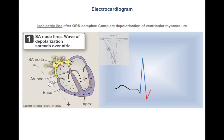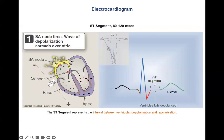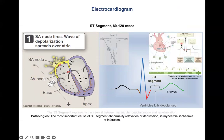Now we have reached the state where the ventricles are fully depolarized — fully excited — indicated by negative charges everywhere. This produces a flat line known as the ST segment. Full depolarization gives no signal, hence no voltage. The ST segment may be elevated or depressed, indicating pathologies to be discussed in a separate video.